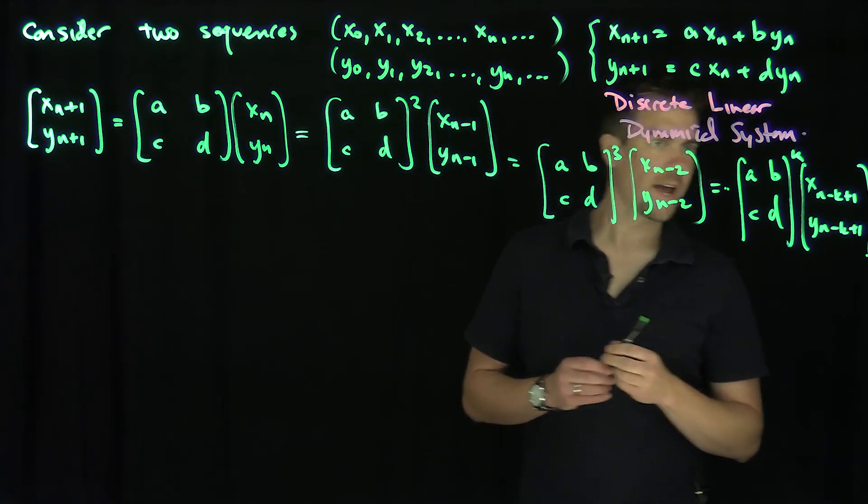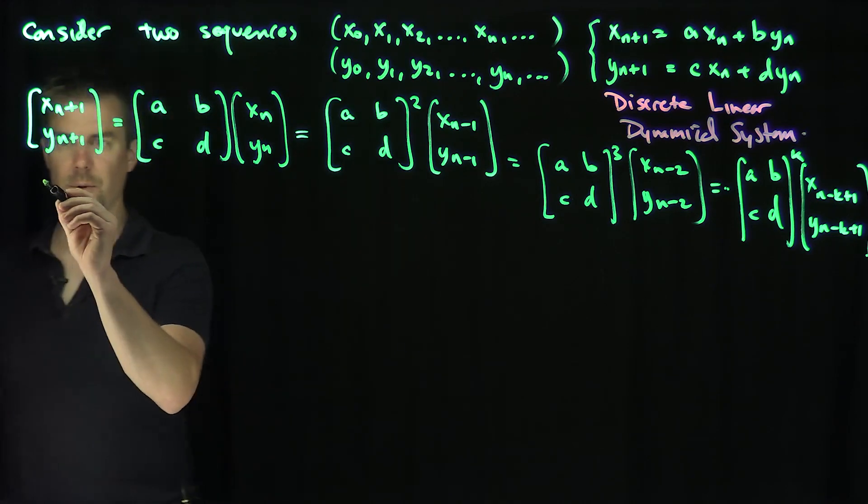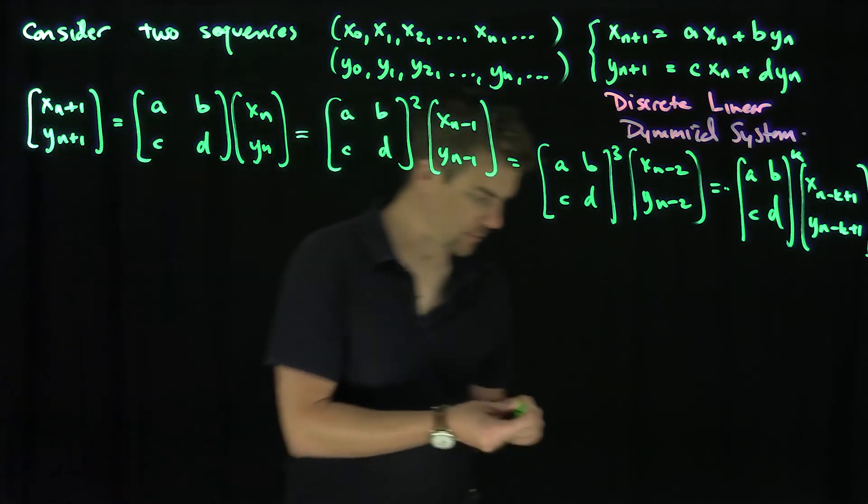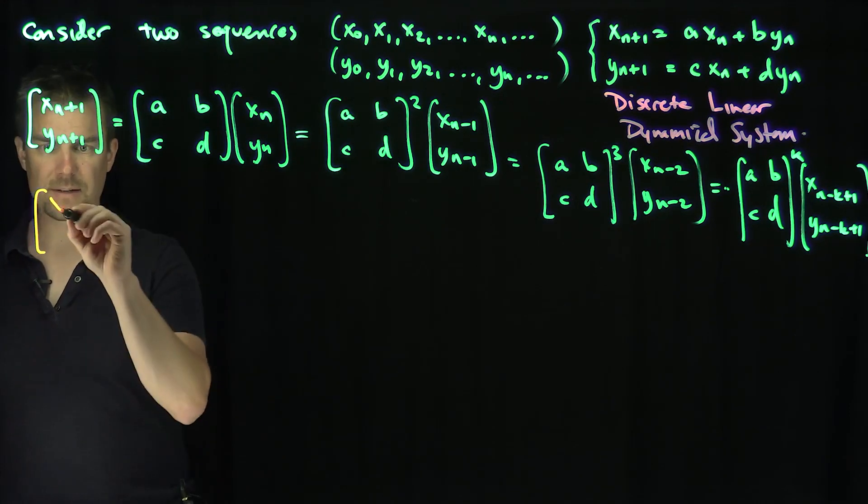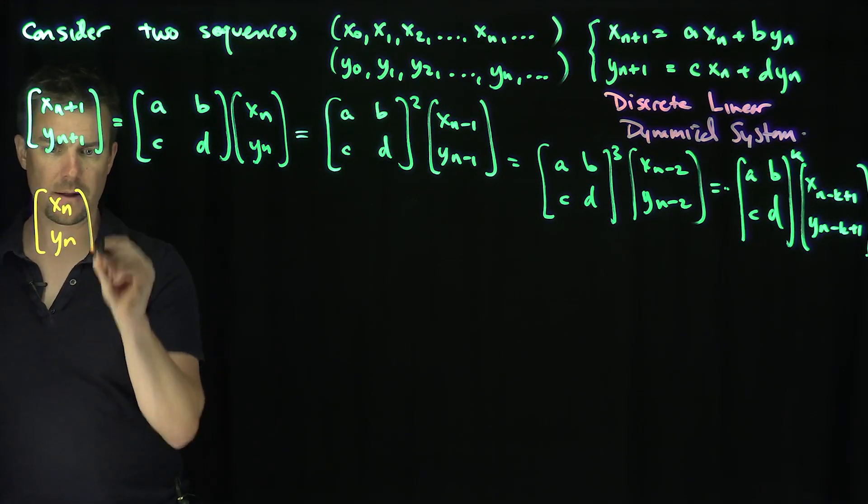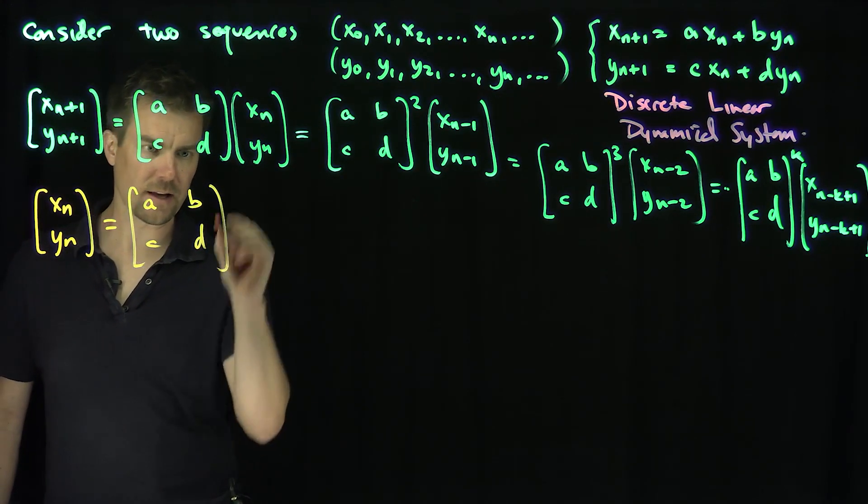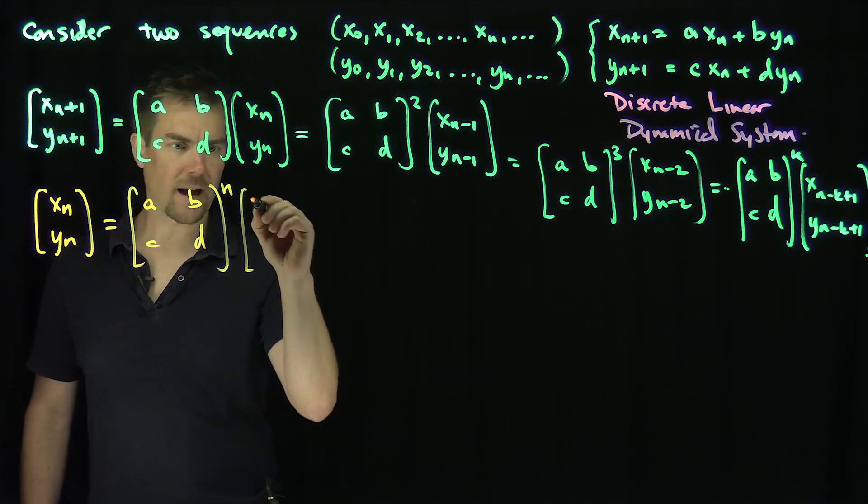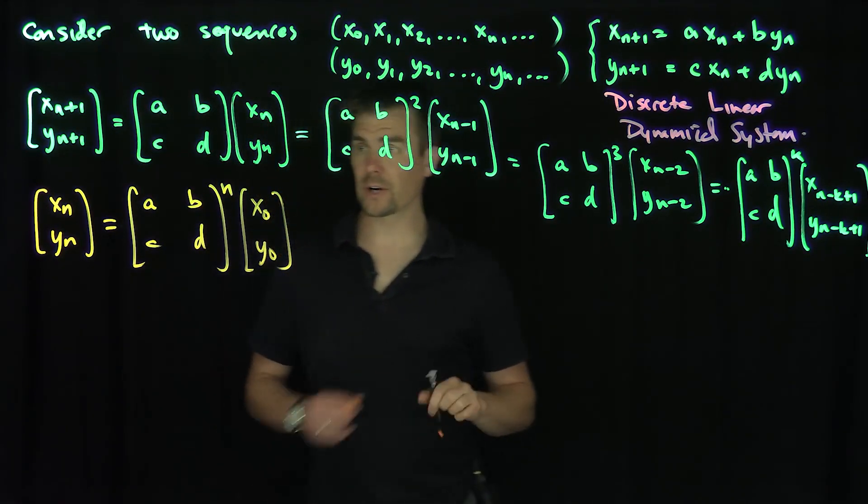And so if I plug in k equals n plus 1, what will I get? Hence by iterating this, I'm just going to shift the indices. We can conclude from this that x n, y n is equal to A, B, C, D to the power of n, and then x of 0, y of 0, the initial distribution.